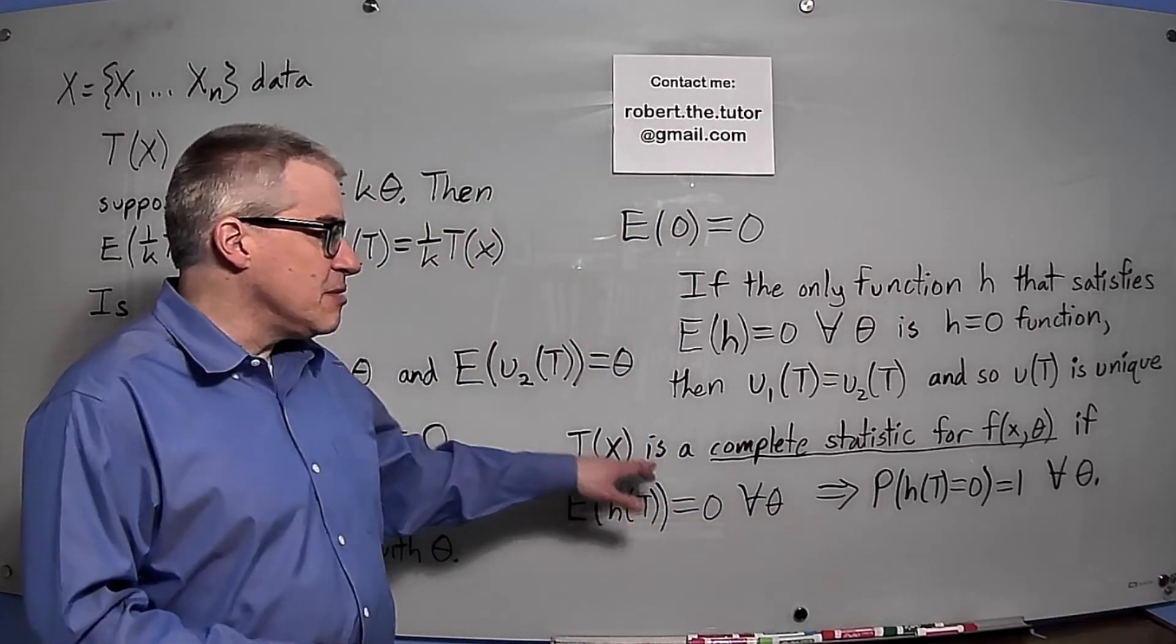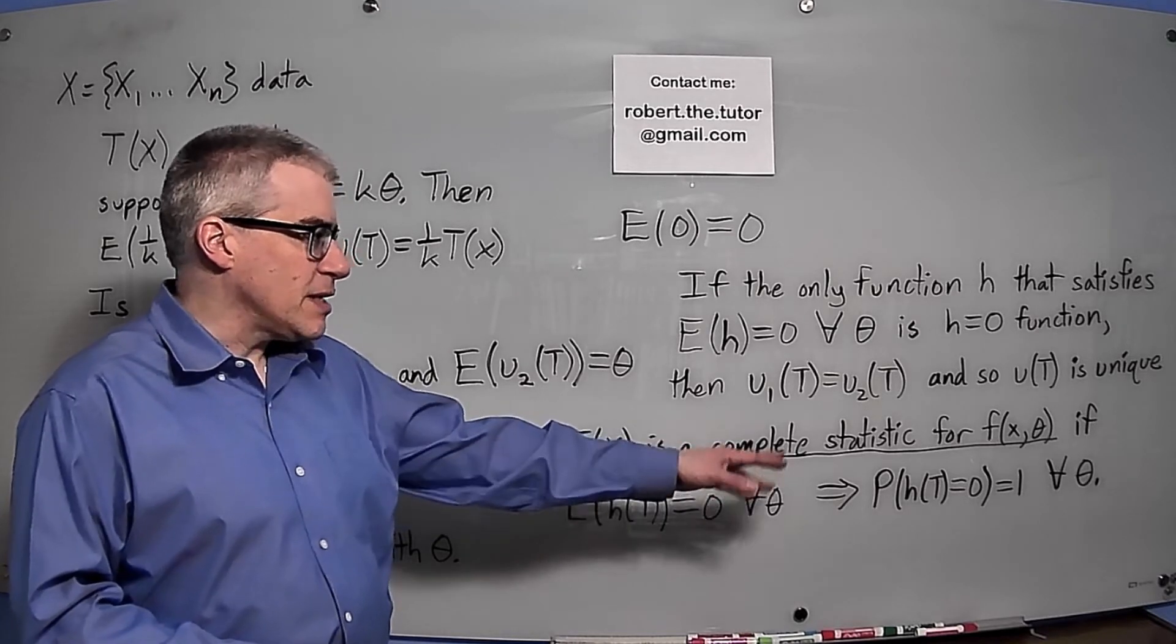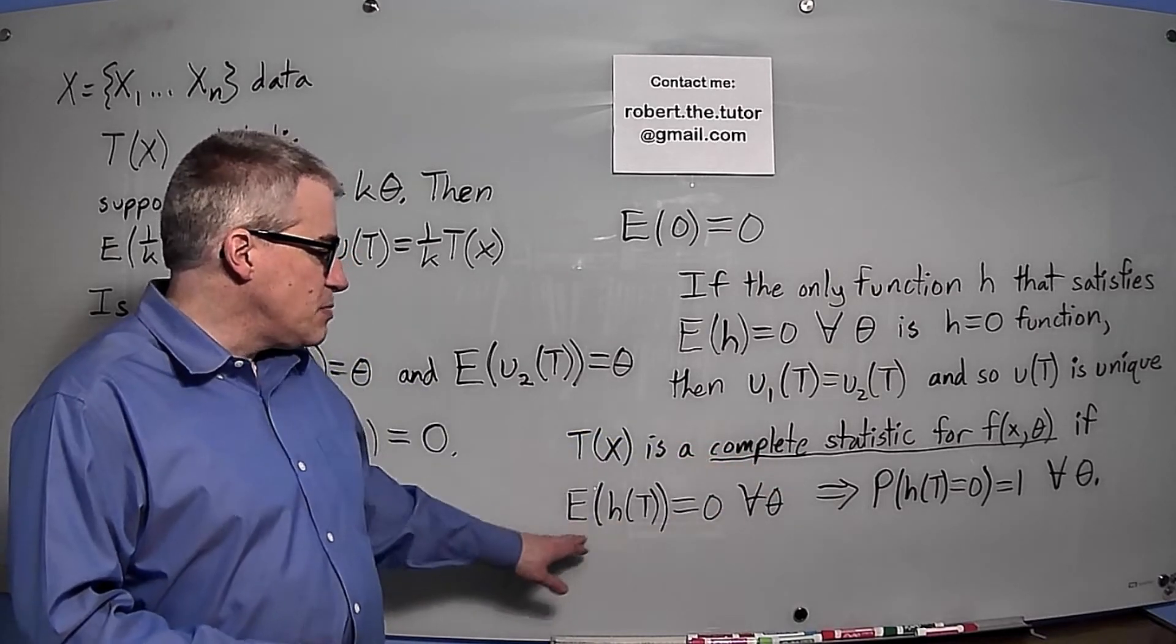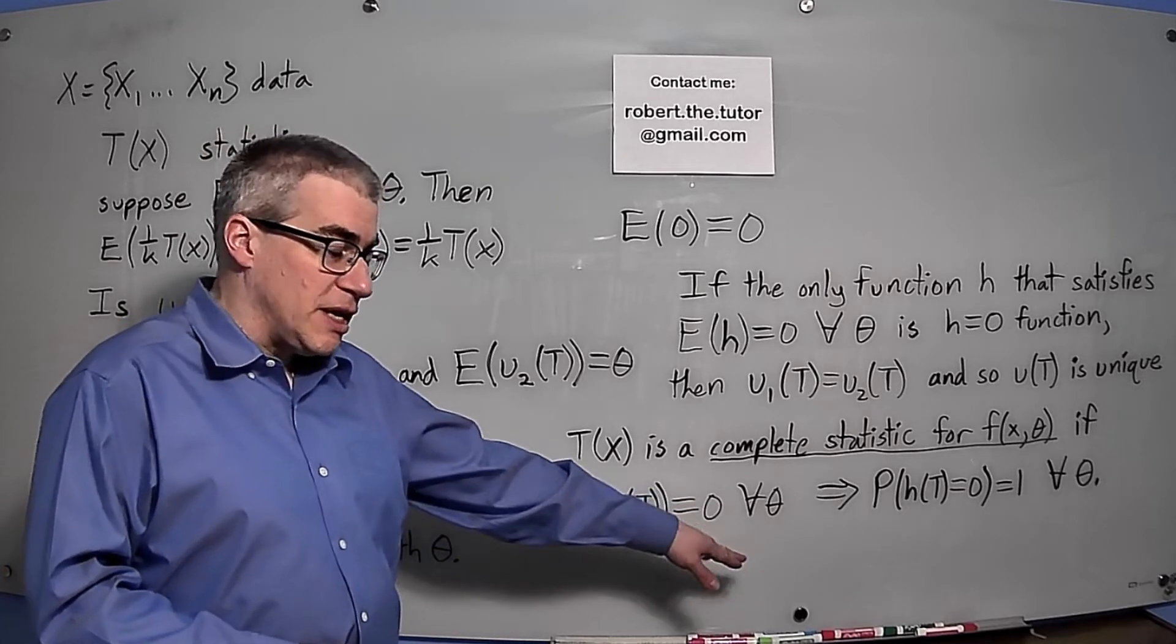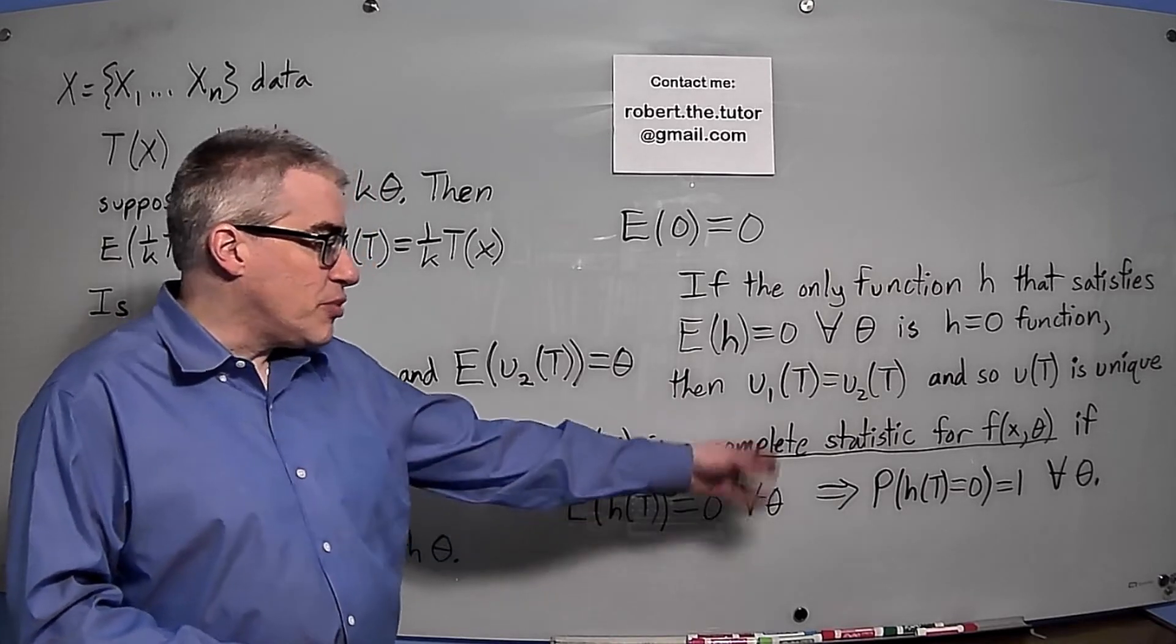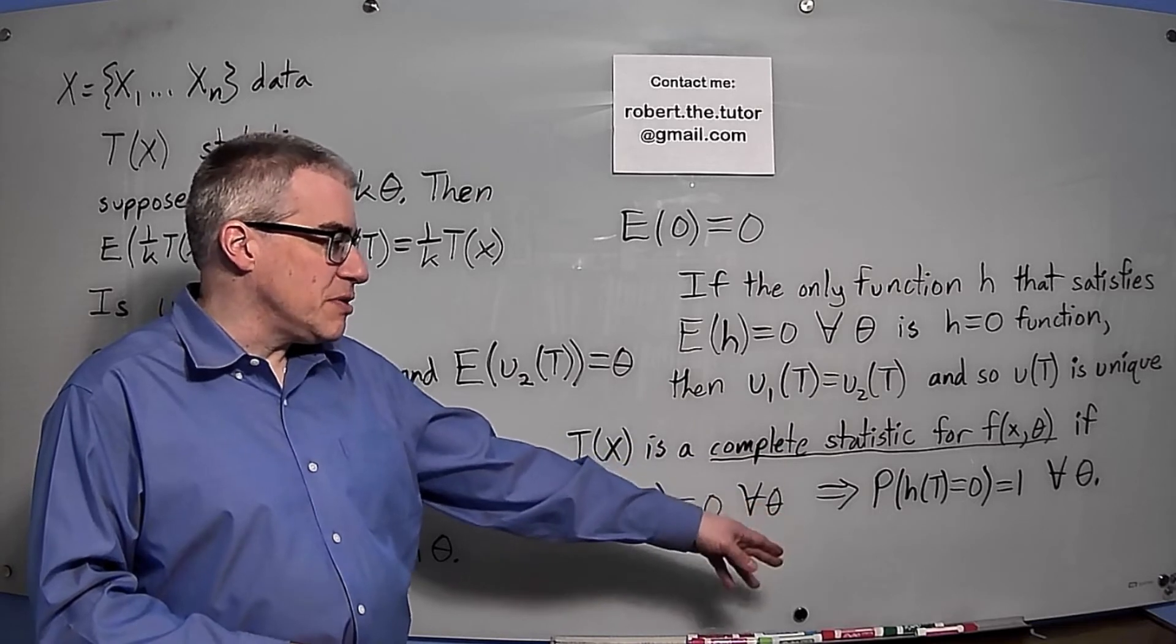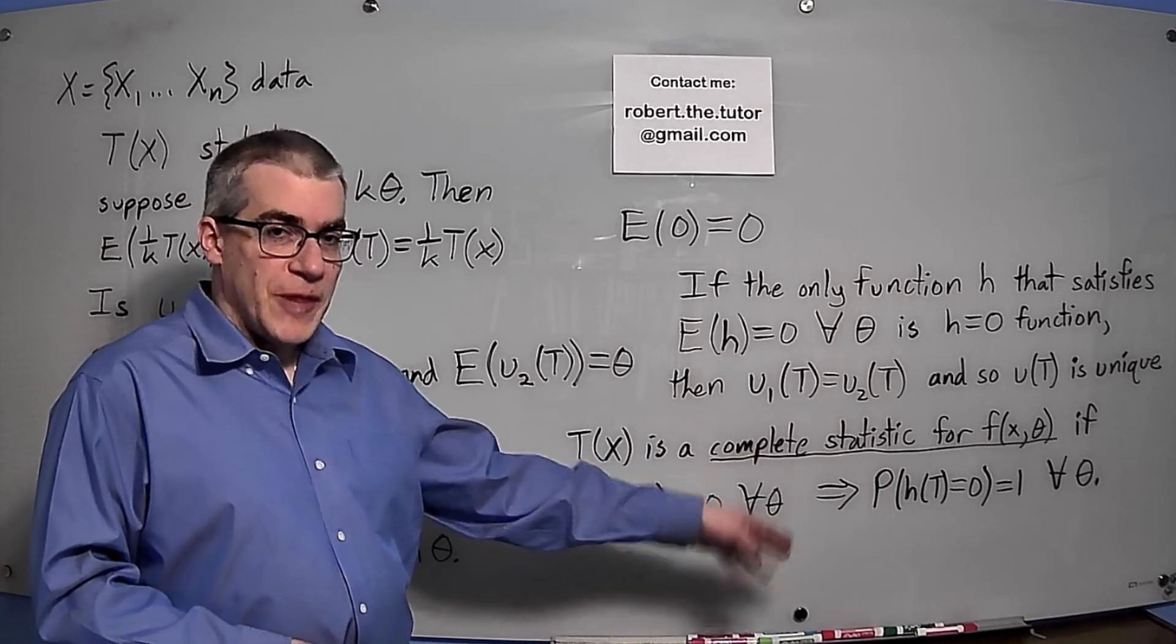They say T(X) is a complete statistic for f(X,θ) if the expected value of h(T) equals 0 for all θ implies the probability that h(T) equals 0 equals 1 for all θ.